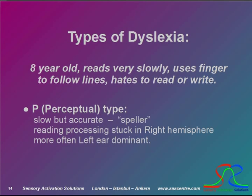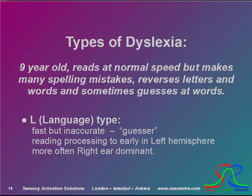What about the second example? This nine-year-old reads at normal speed but makes many spelling mistakes, reverses letters and words, and sometimes guesses at words. This is an L-type dyslexic — L standing for language. She started to use her left side of the brain too early, before she had mastered the decoding of the squiggly lines, before she had made the visual aspect of reading a routine task. Her language is good, but she will often guess at what actually is written. She is a guesser, and she is more likely to be a right ear dominant person.